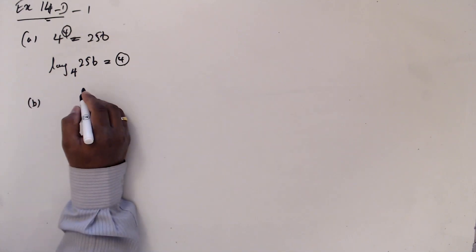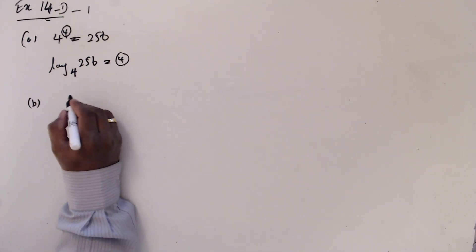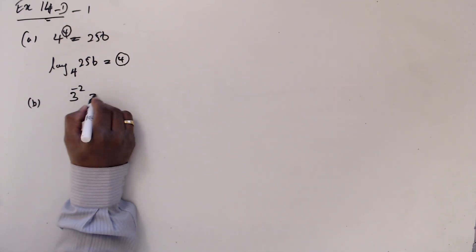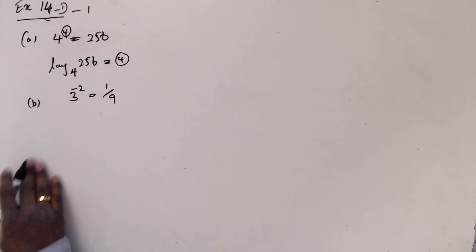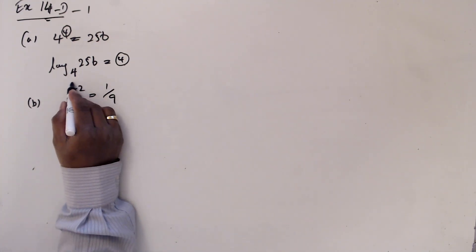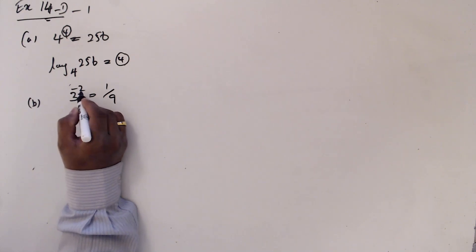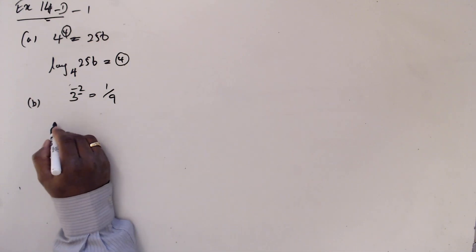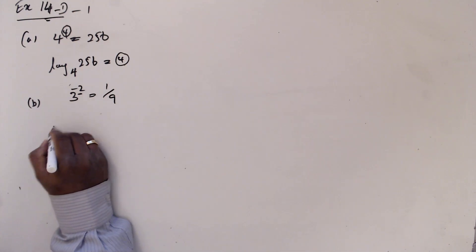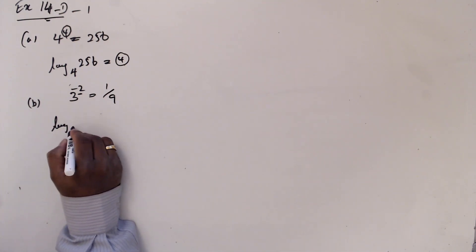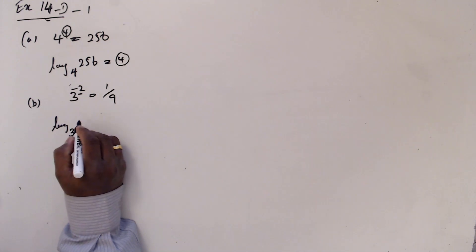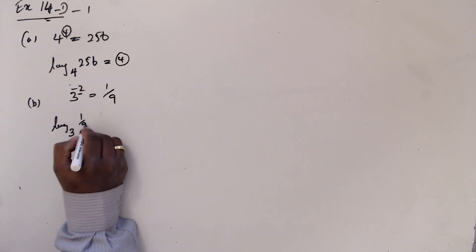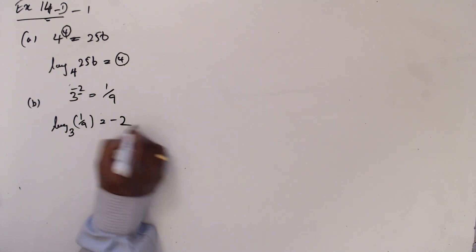Then b: 3 to the power minus 2 equals 1 over 9. Now identify what is the power — power is minus 2. Minus 2 is going to be outside now. So this is: logarithm to base 3 of 1 over 9 is minus 2.